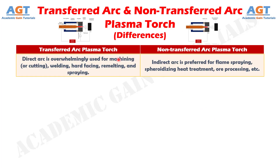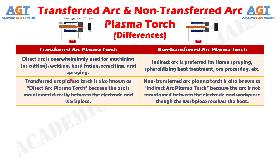Number five: direct arc is overwhelmingly used for machining, cutting, welding, hard facing, remelting, and spraying, whereas indirect arc is preferred for flame spraying, spheroidizing, heat treatment or processing, etc. And difference number six: transferred arc plasma torch is also known as direct arc plasma torch because the arc is maintained directly between the electrode and workpiece, whereas non-transferred arc plasma torch is also known as indirect arc plasma torch because the arc is not maintained between the electrode and workpiece.